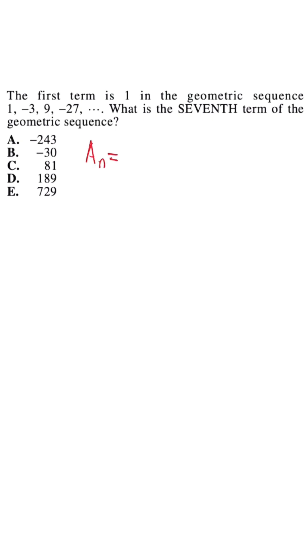We know the formula is a_n equals a_1 times r to the n minus 1 power. So r in this is multiplying by negative 3. So negative 3 is our r. When we simplify,